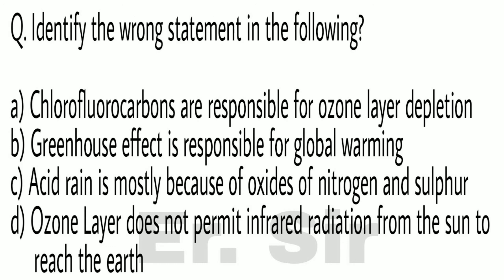Identify the wrong statement in the following: (A) Chlorofluorocarbons are responsible for ozone layer depletion, (B) Greenhouse effect is responsible for global warming, (C) Acid rain is mostly because of oxides of nitrogen and sulfur, (D) Ozone layer does not permit infrared radiation from the sun to reach the earth. The correct option is D.